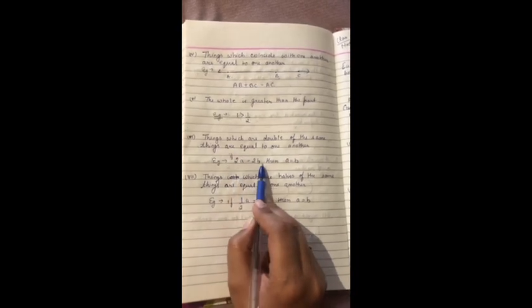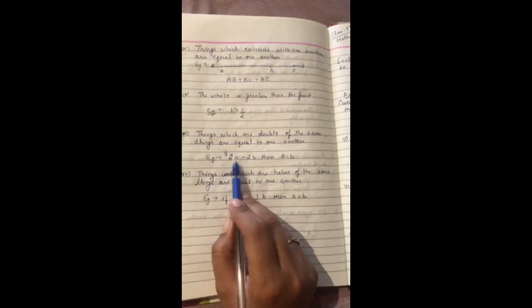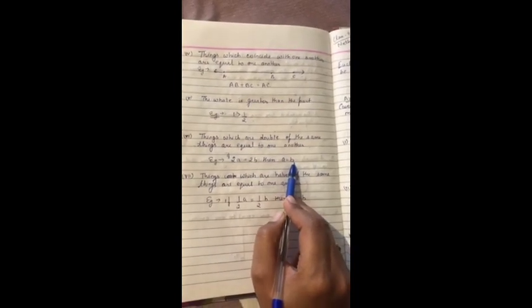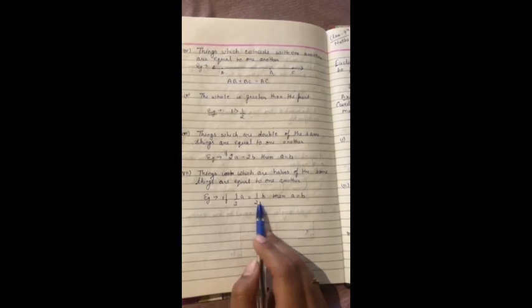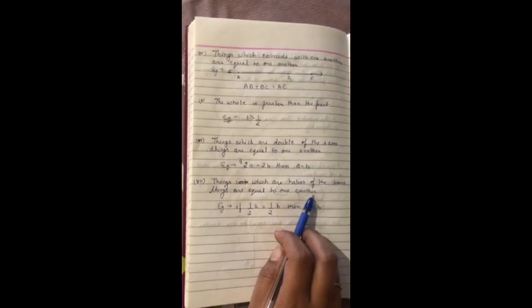Example: if A is equal to 2B and C is equal to 2D, doubles are equal, then we can say A is equal to C. Similarly, if halves are equal, then the whole numbers are also equal. That's all in the axiom part.